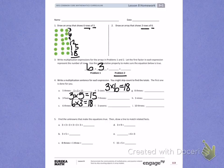Number 5. Find the unknowns to make the equations true. Then draw a line to match related facts.